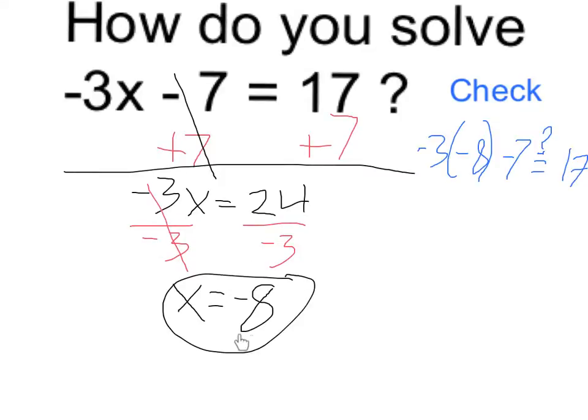To check, I would take the negative 8, plug it into the original, and that gives me -3 times -8, which is 24 minus 7. And yes, 24 minus 7 does equal 17, so it checks out. We are correct.